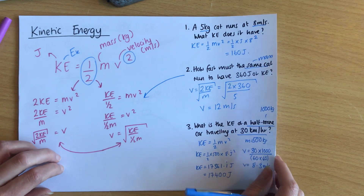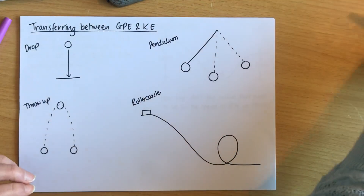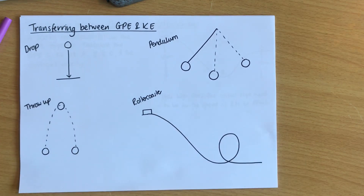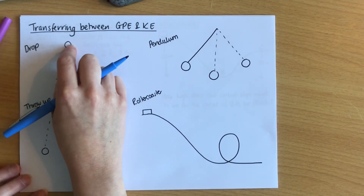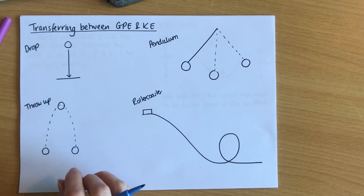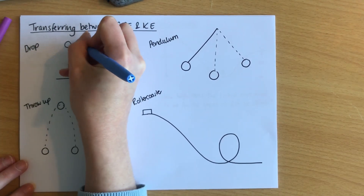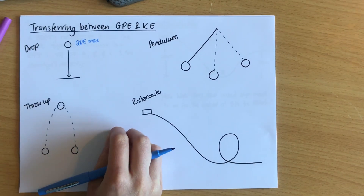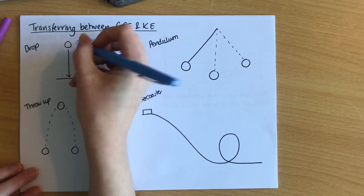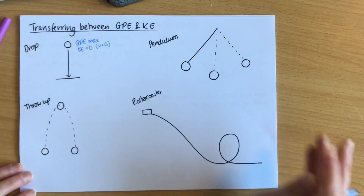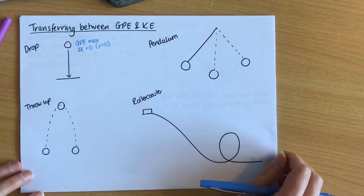You get asked to think about how GPE and KE can transfer between each other, and there are some really common situations. One of the simplest ones is if I drop something from a height. If I've got a ball or any object at a height and it falls, it starts off with GPE at its maximum. Generally it will start stationary, so the KE will equal zero because the speed equals zero, and anything that's still has got no kinetic energy.